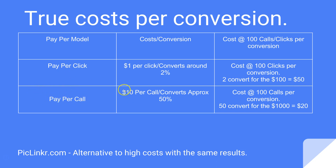For pay-per-call, we have $10 per call and it converts approximately 50% of the time. If someone's picking up the phone to call you, they're interested — it's not a misnomer. So the cost at 100 calls is $1,000. Fifty of those convert, so $1,000 divided by 50 is $20 per conversion.